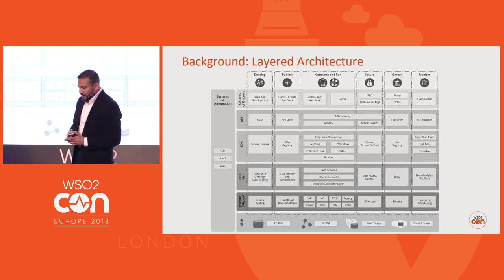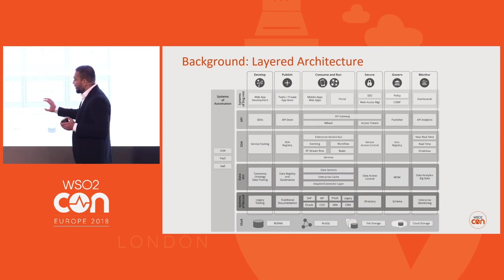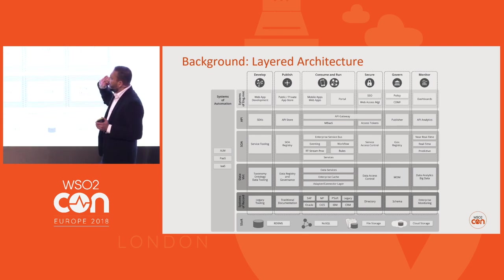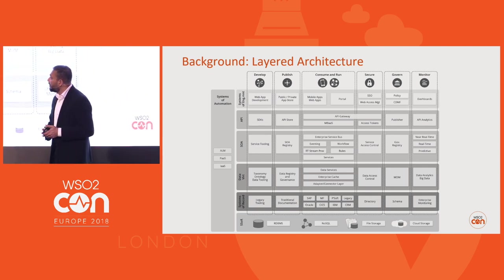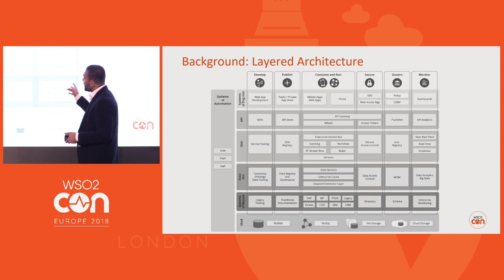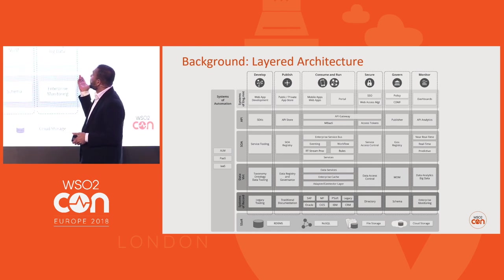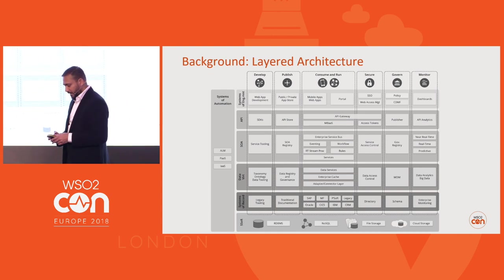This is one of the layered architecture diagrams we used for a while. We used the concept of system of systems when designing it — a system of record layer, then services, APIs, and system of engagement. Usually you see one-dimensional diagrams, but we made it two-dimensional by bringing in the runtime behavior of these runtimes as well as quality of services — security, governance, and monitoring — that you can add without affecting the services. We had many productive discussions with architects using this diagram and built many systems with it.